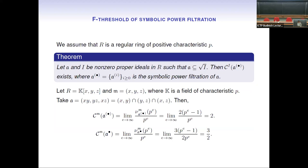Now we focus on the F-threshold of the symbolic power filtration. For the rest of the talk, we assume R is a regular ring of positive characteristic. Let A and I be non-zero proper ideals in R such that A is contained in the radical of I. We prove that the F-threshold of the symbolic filtration with respect to I exists. This F-threshold of the symbolic filtration is not the same as the ordinary filtration threshold. For example, take R to be a polynomial ring in three variables over a field of positive characteristic P, and let A be the ideal generated by the three monomials XY, YZ, and XZ. Then the symbolic F-threshold is 2, but the ordinary F-threshold is 3/2.